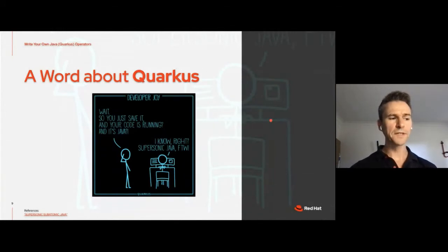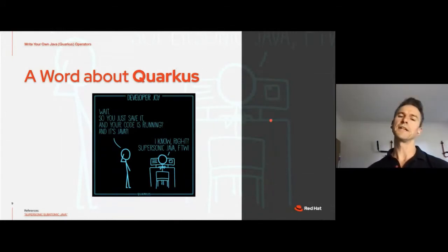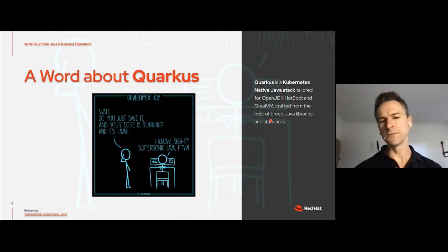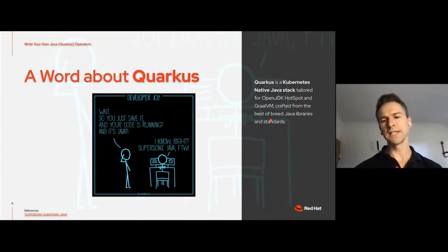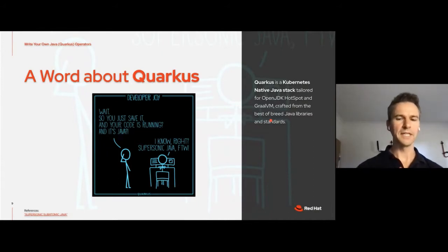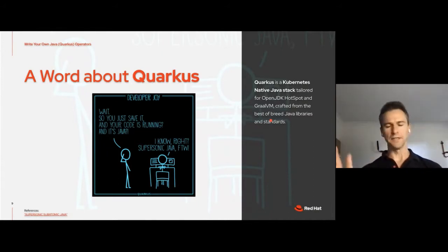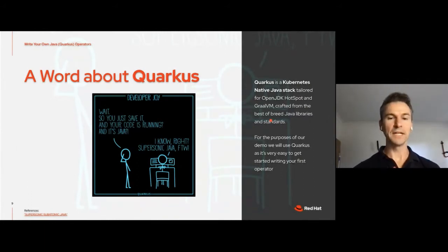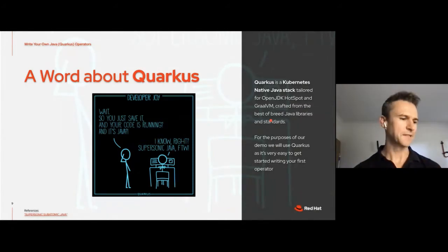Quarkus is an open-source project that Red Hat sponsors. It's a Kubernetes-native Java stack. It runs the OpenJDK HotSpot VM and the GraalVM, so it can be compiled to native, which makes it great for serverless. For the purposes of our demo, we'll use Quarkus because it's really easy to get started. It's like Spring Boot, but even smaller, and it's really modernized Java for me.